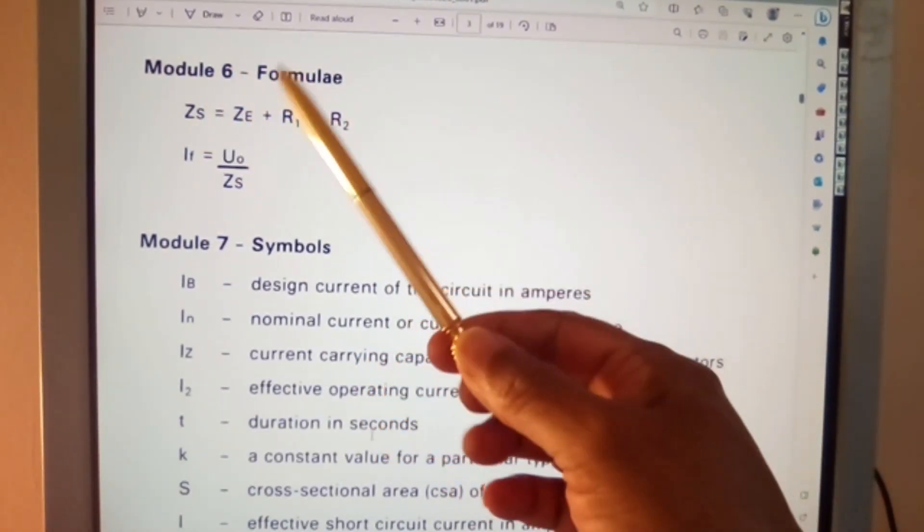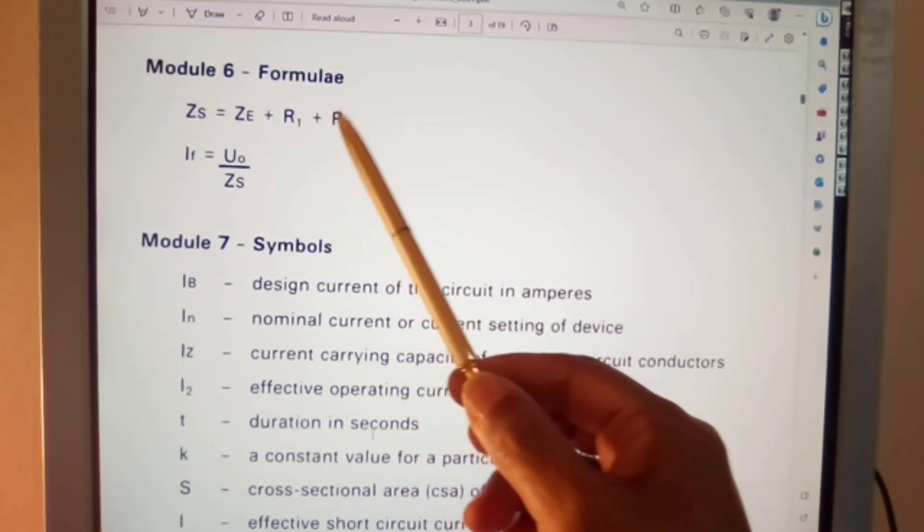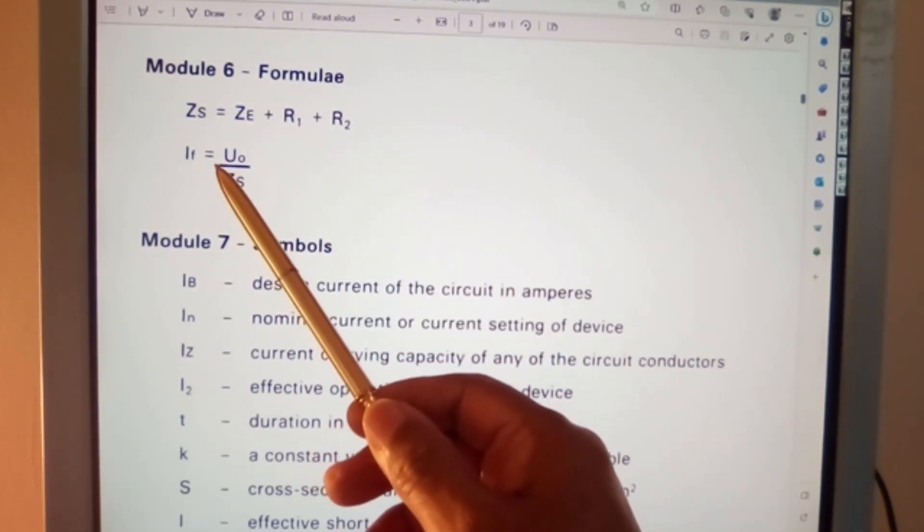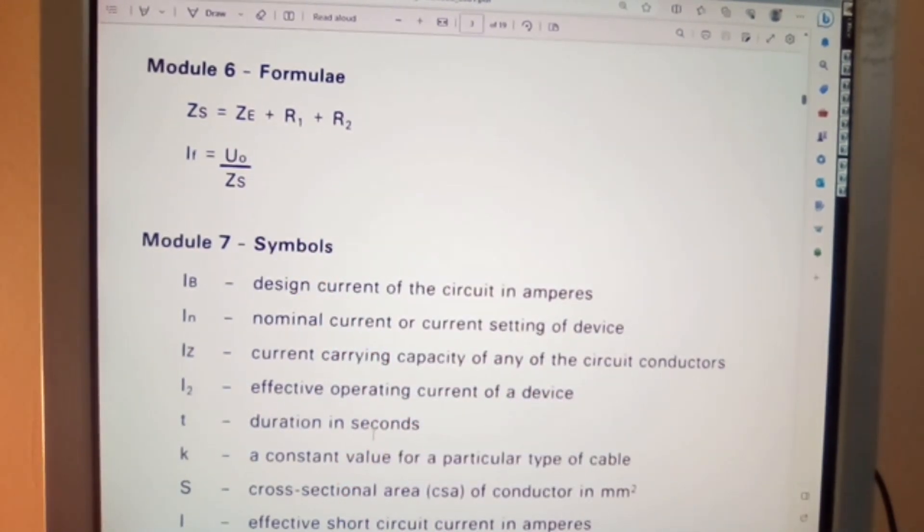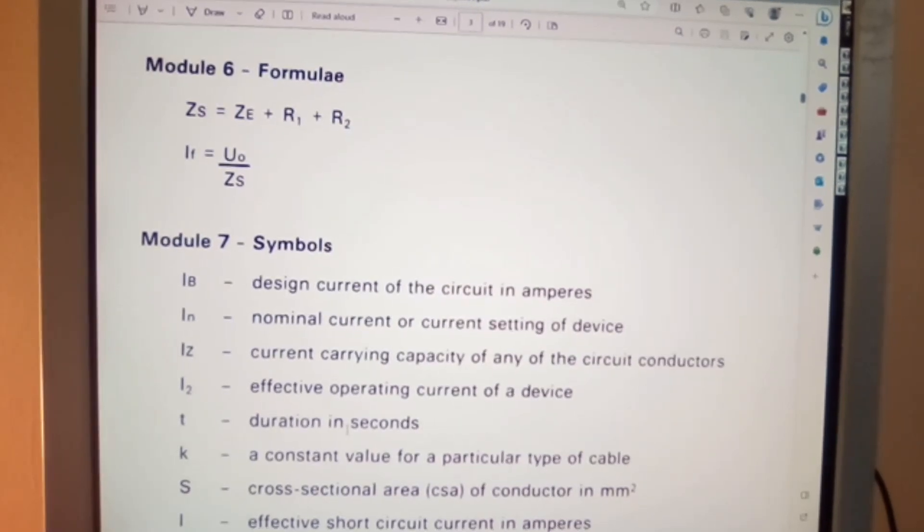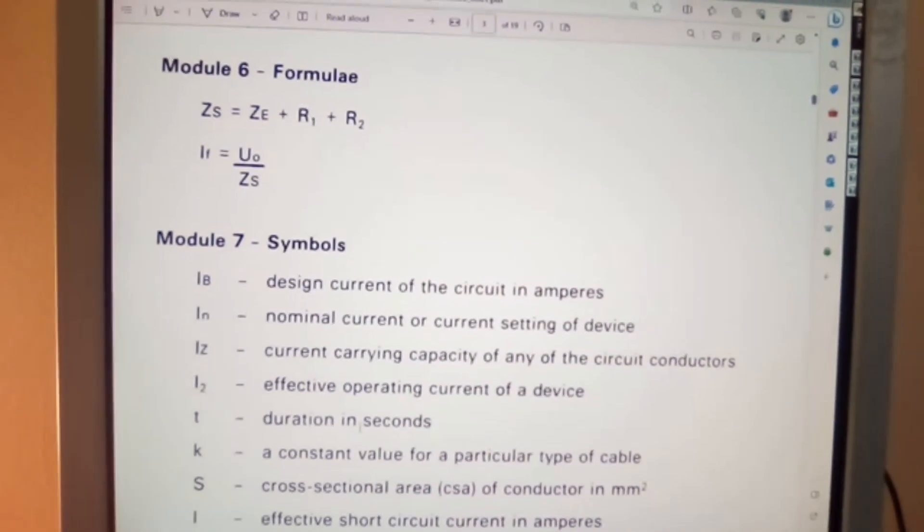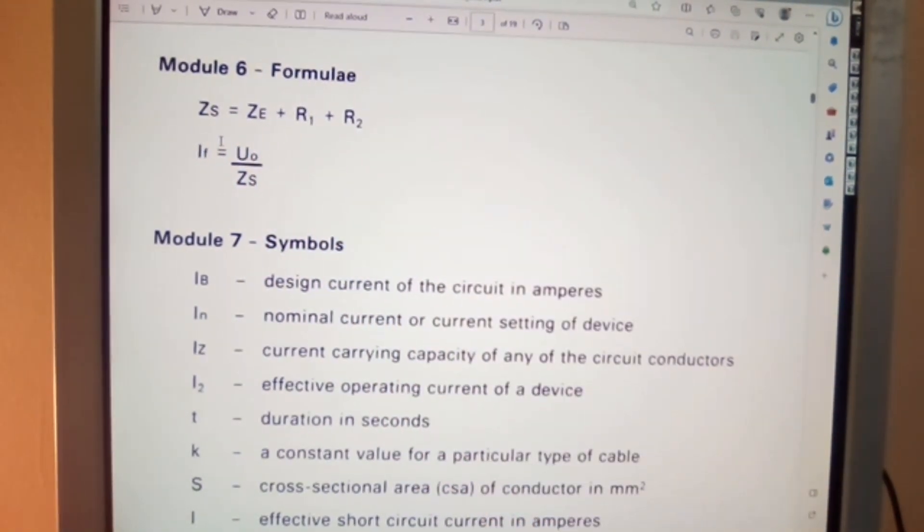Now Module 6 continued, again point of reference, formulae. Zs equals ZE plus R1 plus R2. IF equals supply voltage over Zs, and that would be fault current to flow.